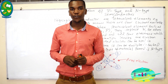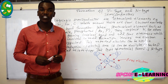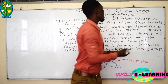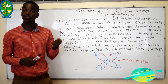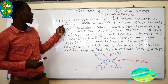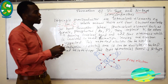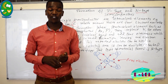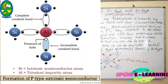The addition of donor and acceptor impurities to intrinsic semiconductors results in the formation of two types of extrinsic semiconductors: N-type and P-type. Intrinsic semiconductors such as silicon, germanium, and diamond are tetravalent elements — found in group 4 of the periodic table — meaning they have four outermost electrons available for covalent bond formation.